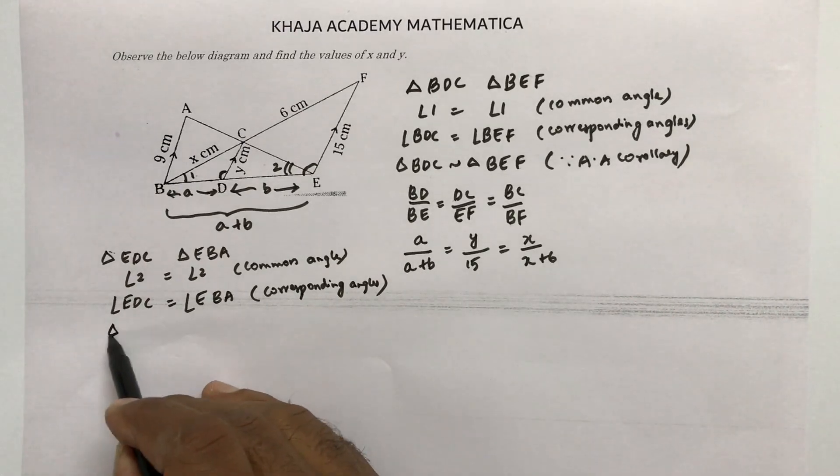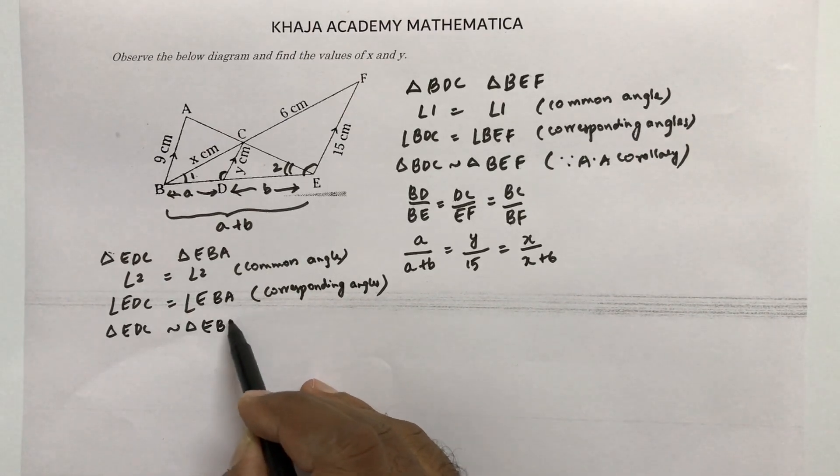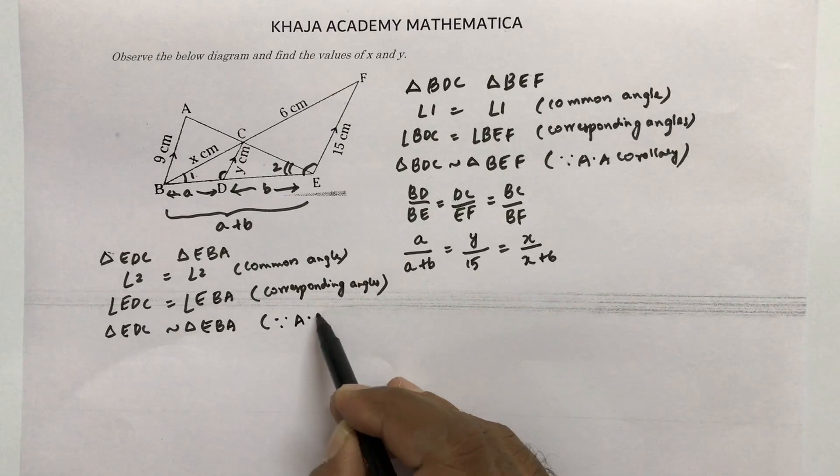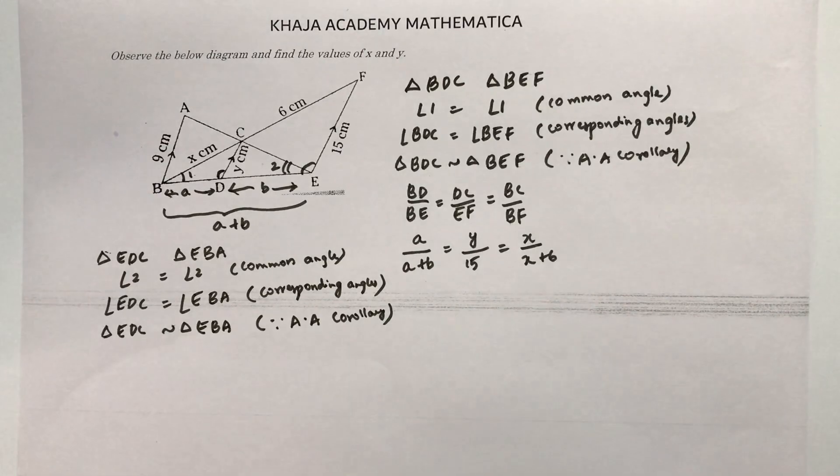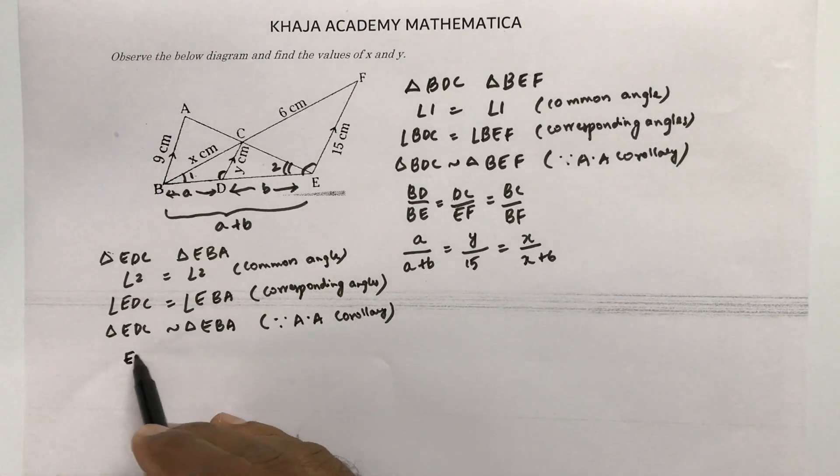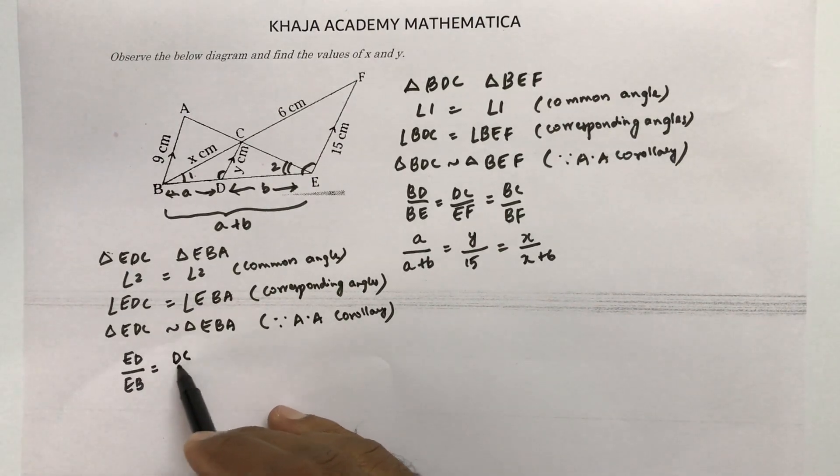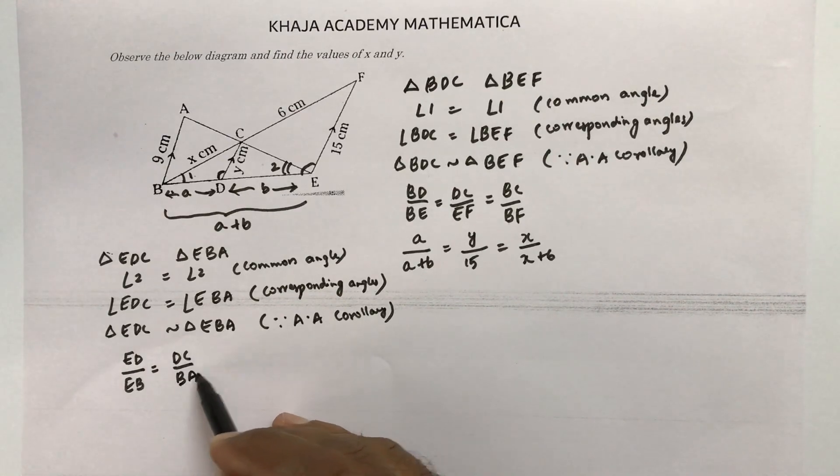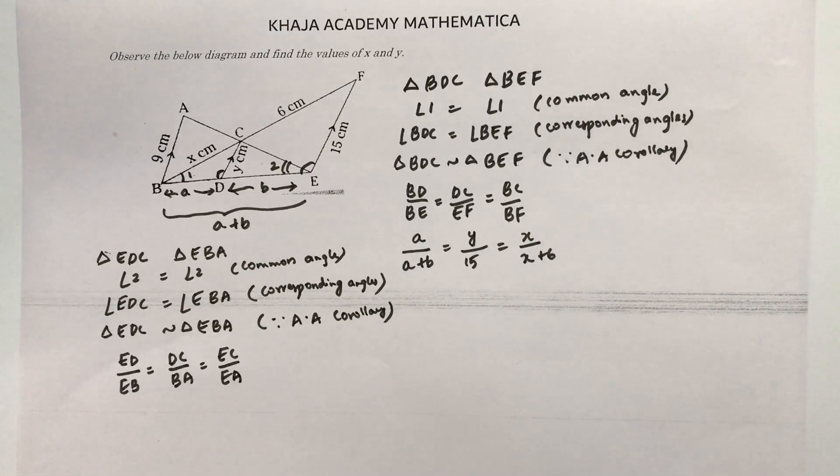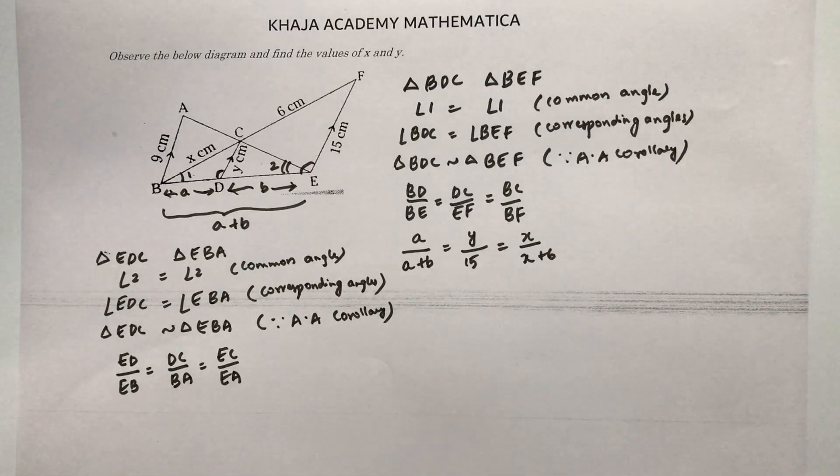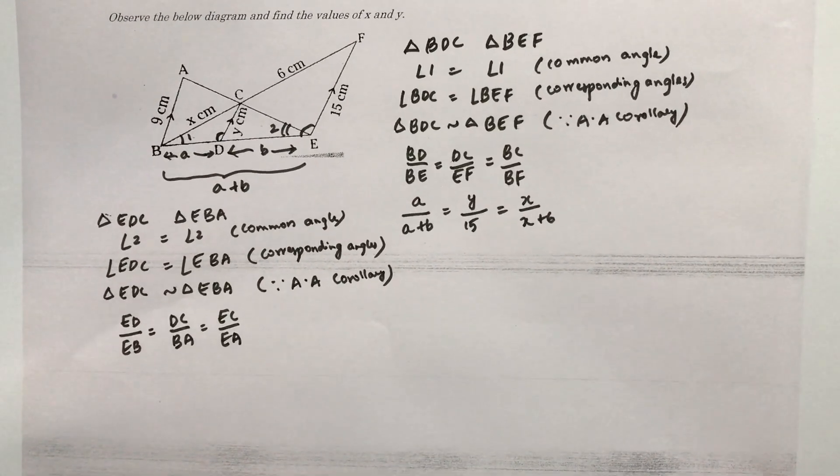Now triangle, two angles we got equal. So triangle EDC is similar to triangle EBA. Angle, angle corollary. Now if I write the sides proportional here ED by EB equals DC by BA. EC by EA by CPST. Corresponding parts of similar triangles. The sides of similar triangles will be like proportional.